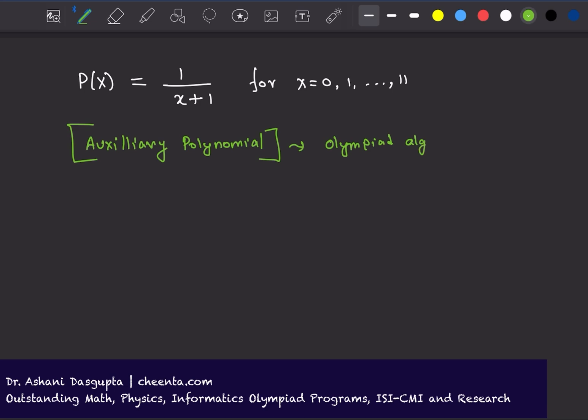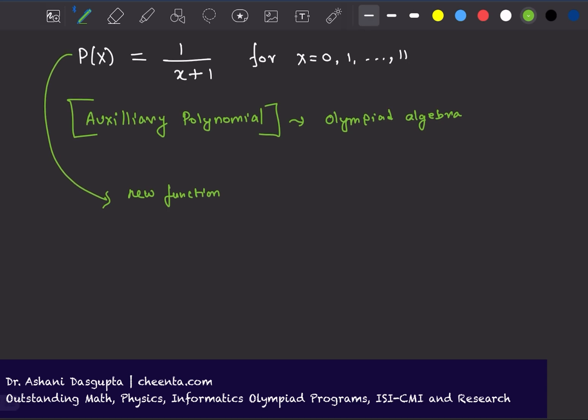Given a particular polynomial or a function, you can create a new function out of it. In this case, we will write (x+1)P(x) - 1. We will call this polynomial capital F(x).